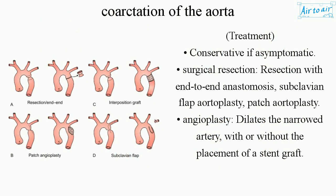Treatment options include conservative management if asymptomatic, surgical resection with end-to-end anastomosis, subclavian flap aortoplasty, patch aortoplasty, and angioplasty to dilate the narrowed artery, with or without the placement of a stent graft.